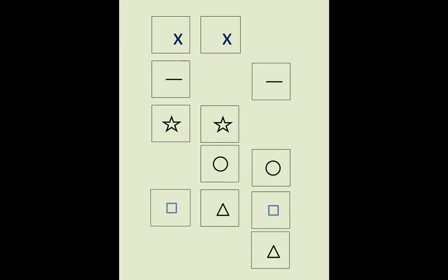The fifth row now has a square, a triangle, and a square. Those all need to be squares. So we move the triangle down.